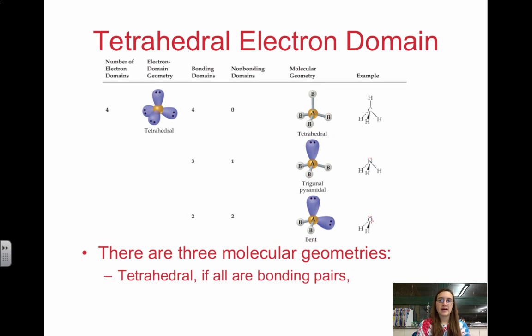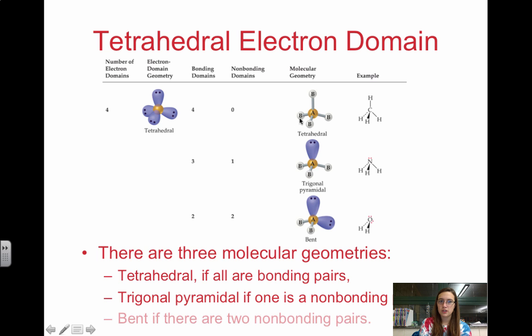Going back to the tetrahedral, we have four, zero—that's the tetrahedral electron domain, which is also tetrahedral molecular geometry. Four bonding, zero non-bonding. That means we have all atoms. If we take one away, we have three bonding domains, one non-bonding—that's trigonal pyramidal. Two and two, this is bent. There are three molecular geometries that are derived from the tetrahedral electron domain geometry.